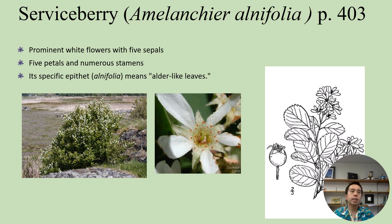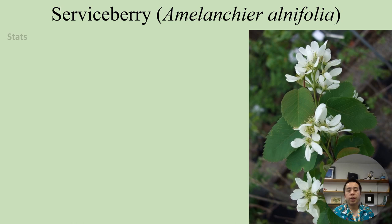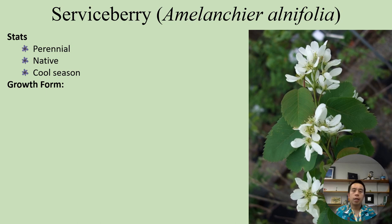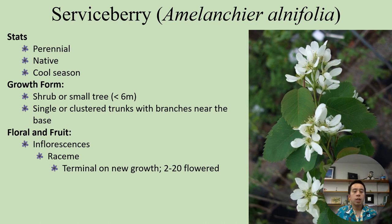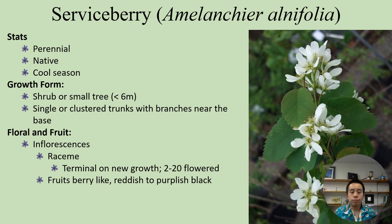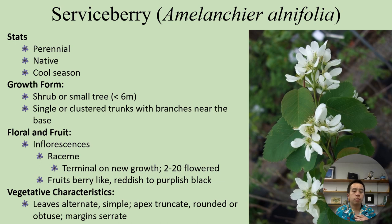Amelanchier alnifolia is a perennial native and a cool-season plant. It typically grows as a shrub or small tree, usually less than six meters tall, often with single or clustered trunks with branches near the base. The inflorescences are terminal on new growth, with two to twenty flowers, meaning the flowers occur at the end of new growth. The fruits are berry-like and often reddish to black. Vegetatively, the leaves are alternate and simple, with truncate to rounded or obtuse apex, and the margins are often serrate.